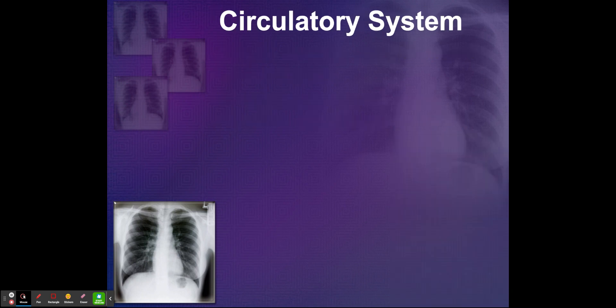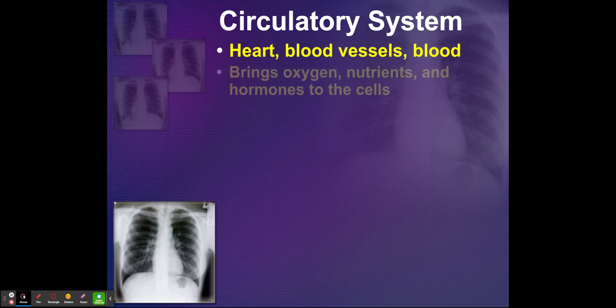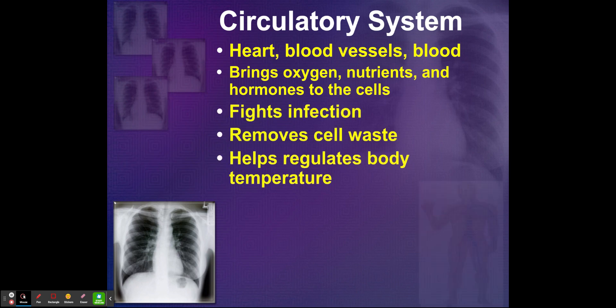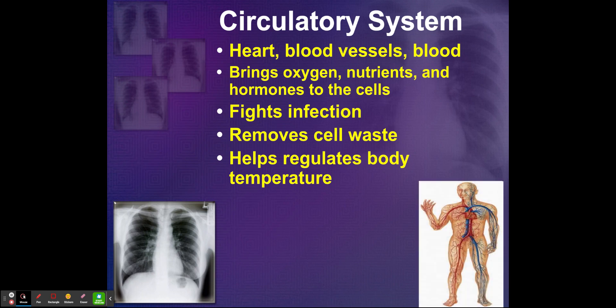You have your circulatory system, which includes your heart, blood vessels, and your blood. It brings oxygen, nutrients, and hormones to the cells, fights infection, removes cell waste, and helps regulate the body's temperature.